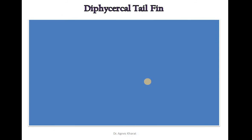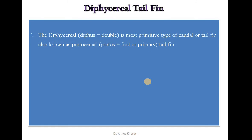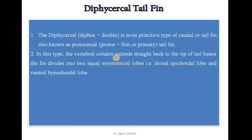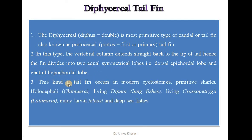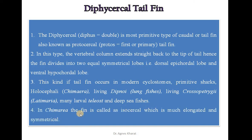The third type of tail fin is the diphycercal tail fin. Diphyse means double. It is the most primitive type of caudal fin or tail fin, which is also known as protocercal. Protos means first or primary tail fin. In this type, the vertebral column extends straight back to the tip of the tail; hence the fin divides into two equal symmetrical lobes, i.e., dorsal epichordal lobe and ventral hypochordal lobe. This kind of tail fin occurs in modern cyclostomes, primitive sharks, holocephalans, living dipnoans, living crossopterygians, and many larval teleosts and deep-sea fish. In chimeras, the fin is also called isocercal, which is much elongated and symmetrical.